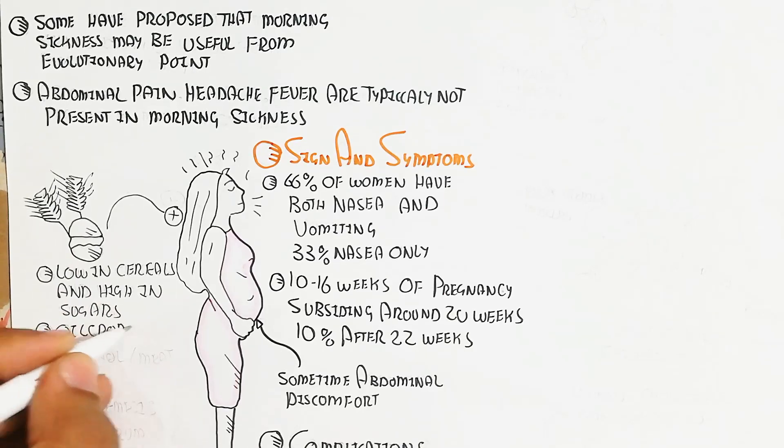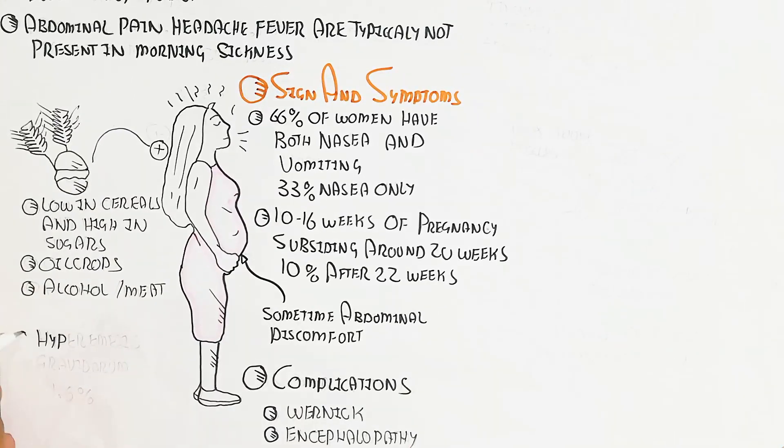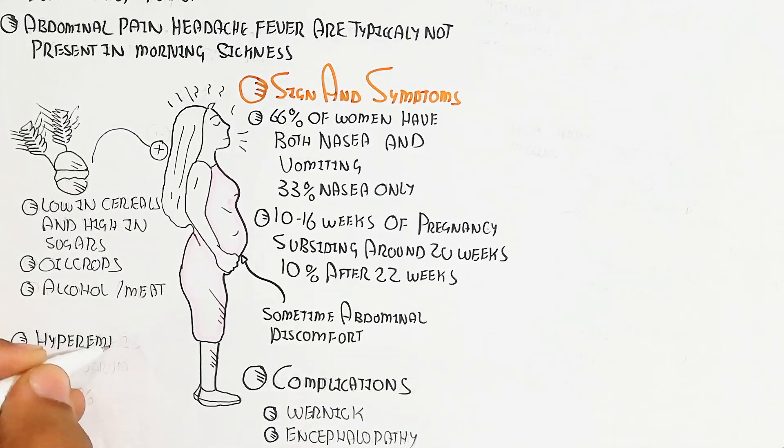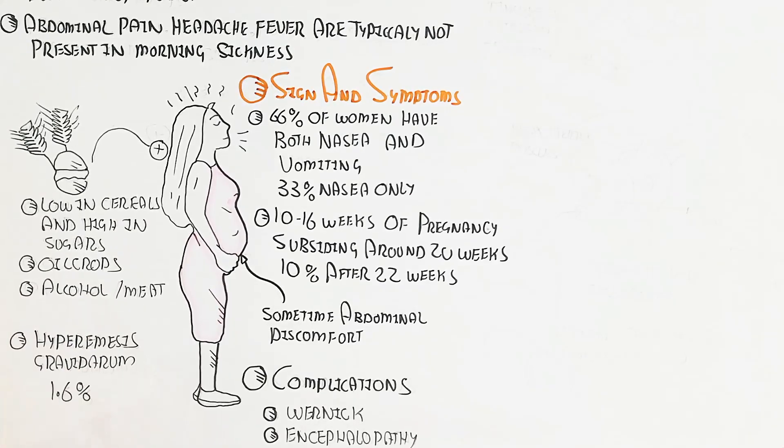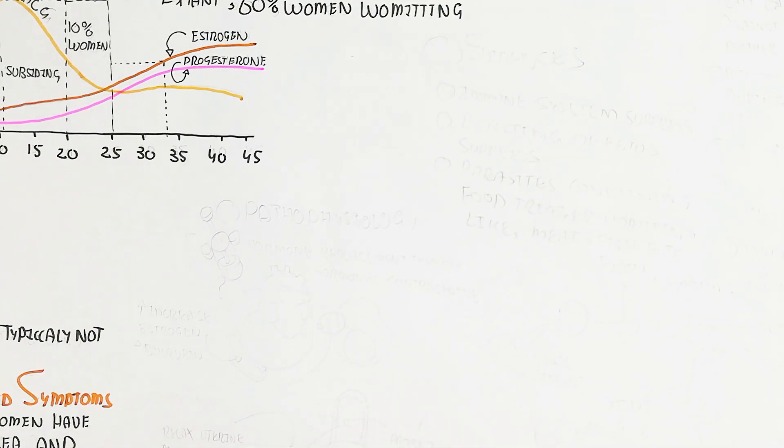Enhancement triggers include oil crops and alcohol as well as meat which trigger vomiting. Hyperemesis gravidarum affects 1.6 percent throughout the world population.